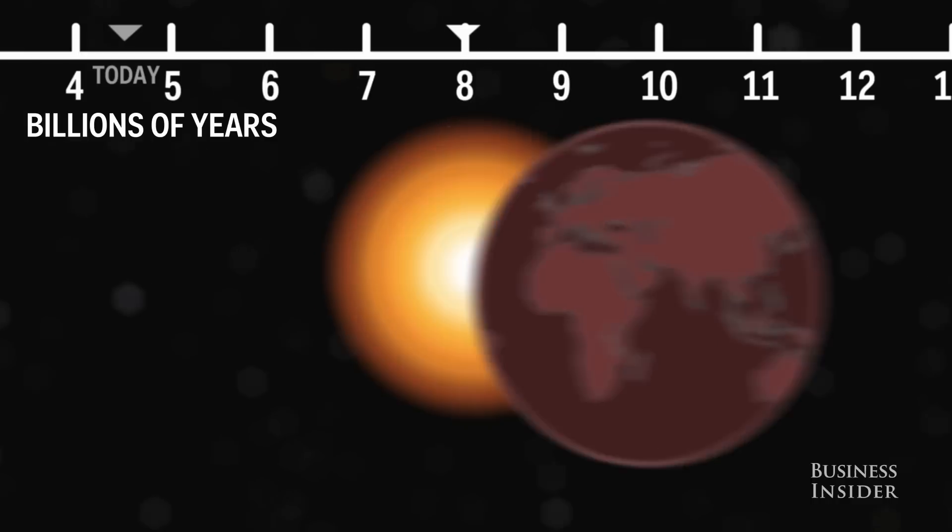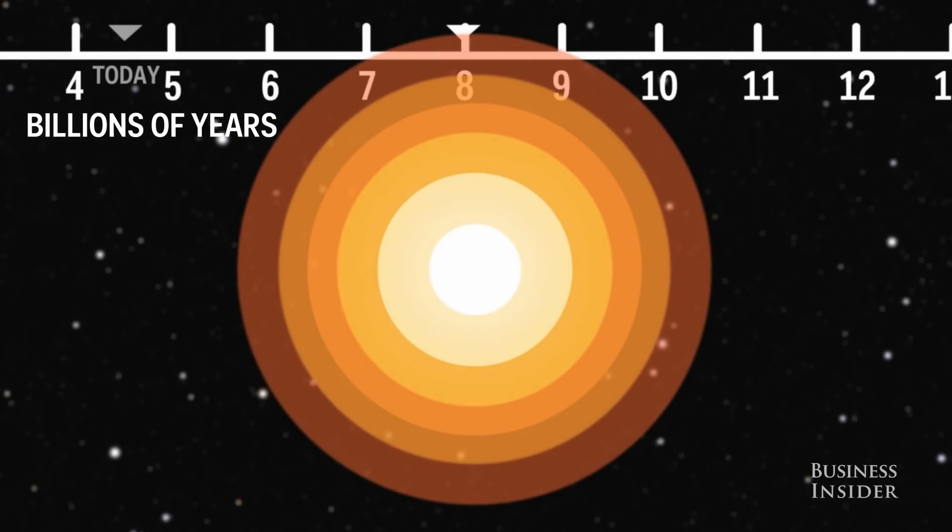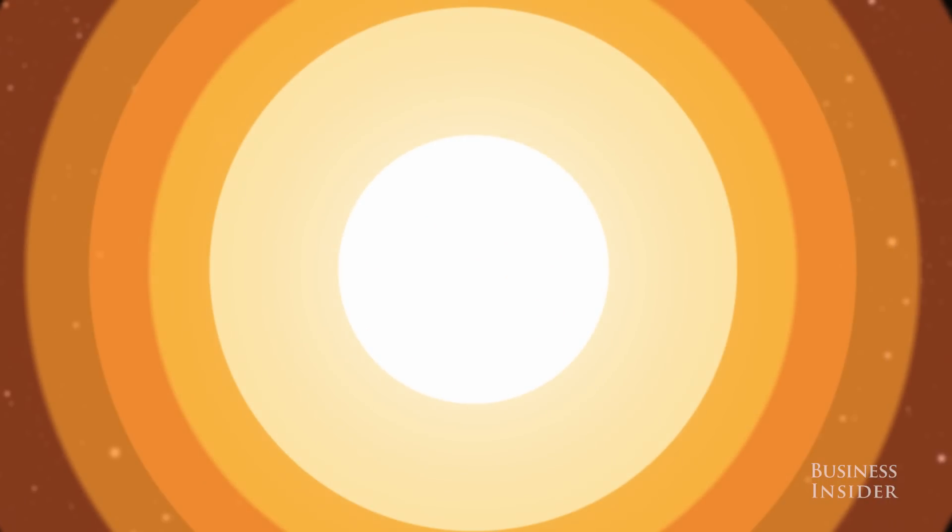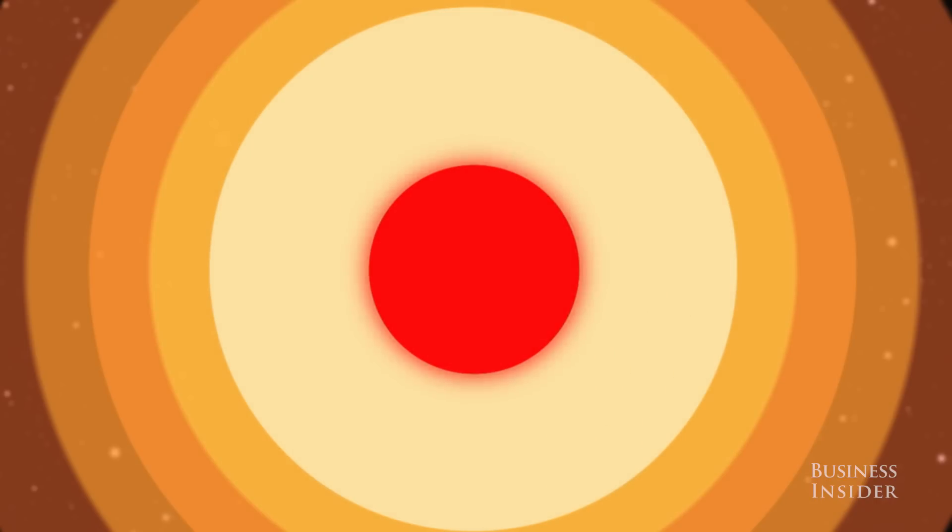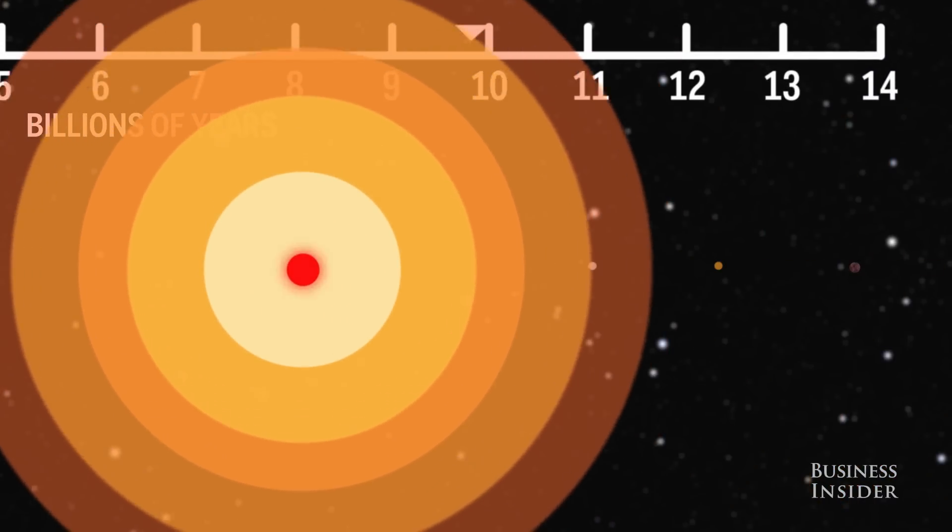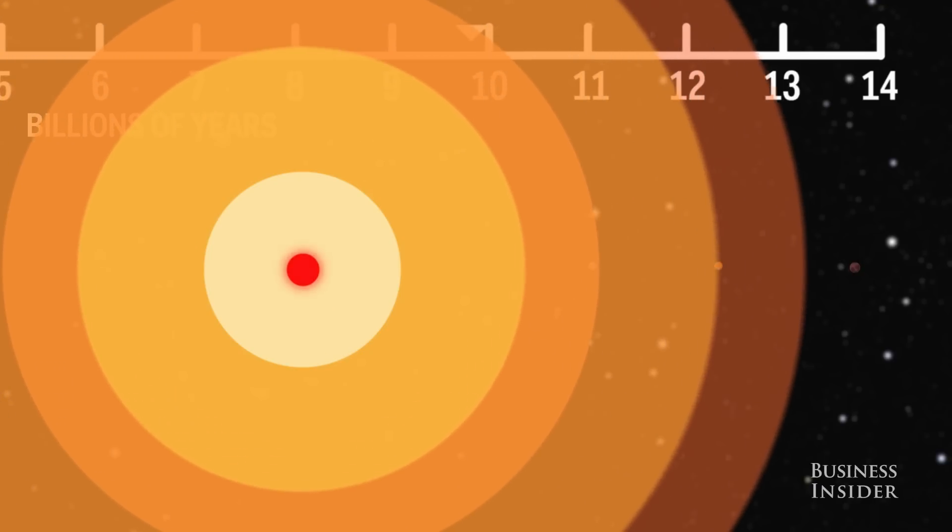After that, the situation gets worse. 5.4 billion years from now, the Sun will exhaust all hydrogen in its core. The core will heat up and get extremely dense, but the Sun's outer layer will expand a lot. It could expand big enough to swallow Mercury, Venus, and maybe even Earth.